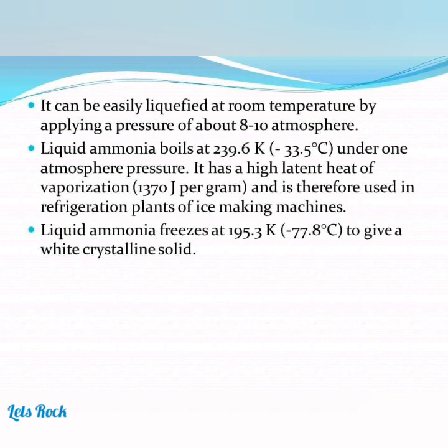Liquid ammonia boils at 239.6 K (−33.5°C) under 1 atmosphere pressure. It has a high latent heat of vaporization — 1370 J per gram — and is therefore used in refrigeration plants and ice-making machines. Liquid ammonia freezes at 195.3 K (−77.8°C) to give a white crystalline solid.